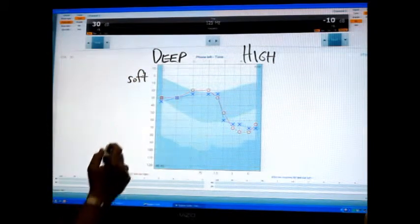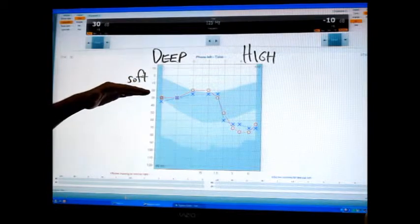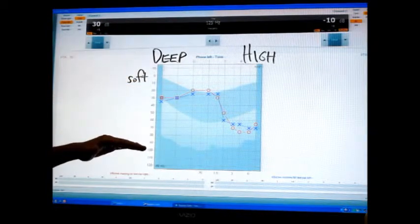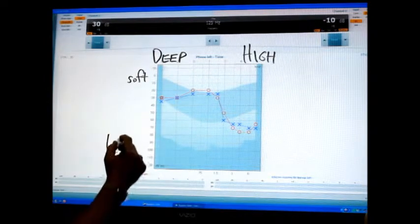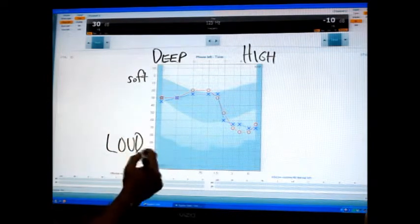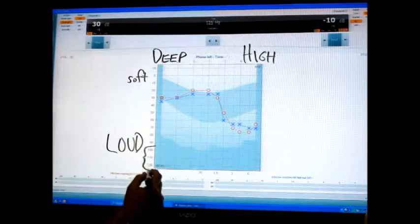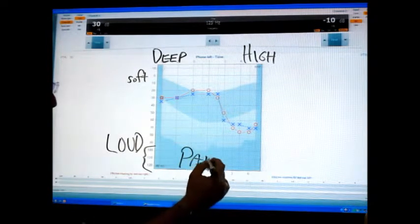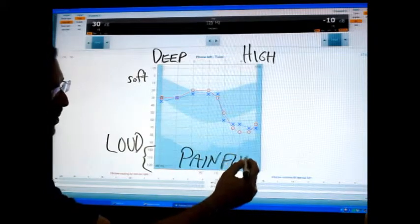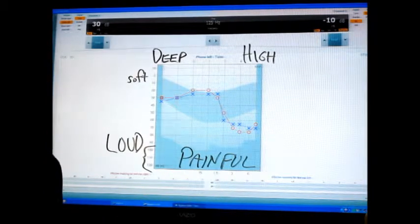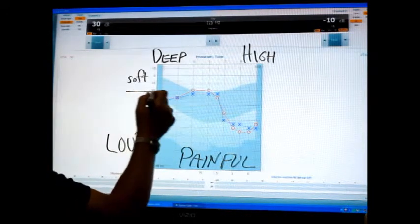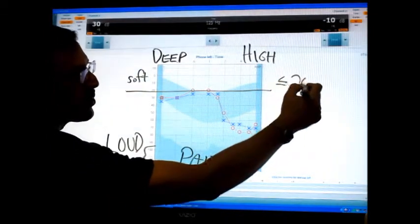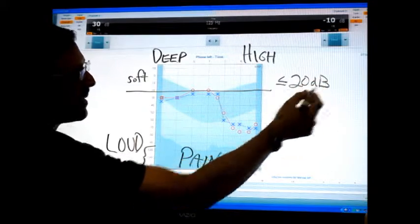At the very top of the page we have soft volume, and the volume measured in decibels is getting louder as we go down the page. When we get down here to the bottom of the page around 100 to 120 decibels, this is usually painfully loud for most people with normal hearing.